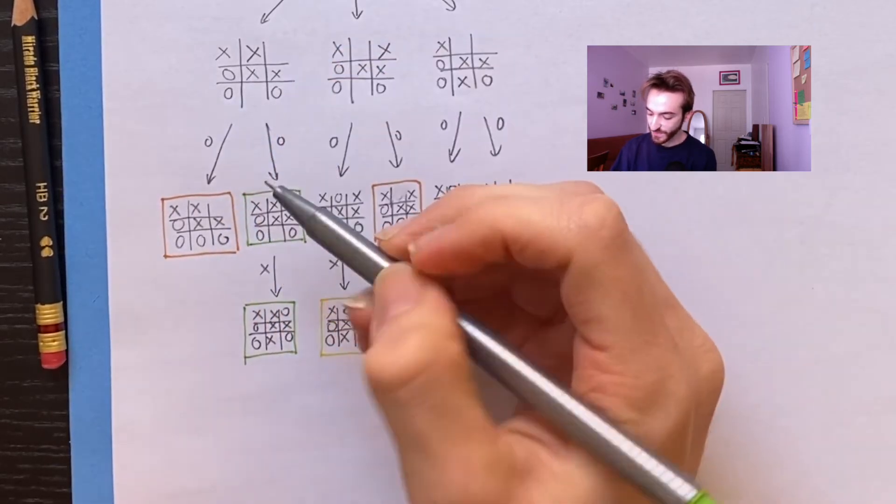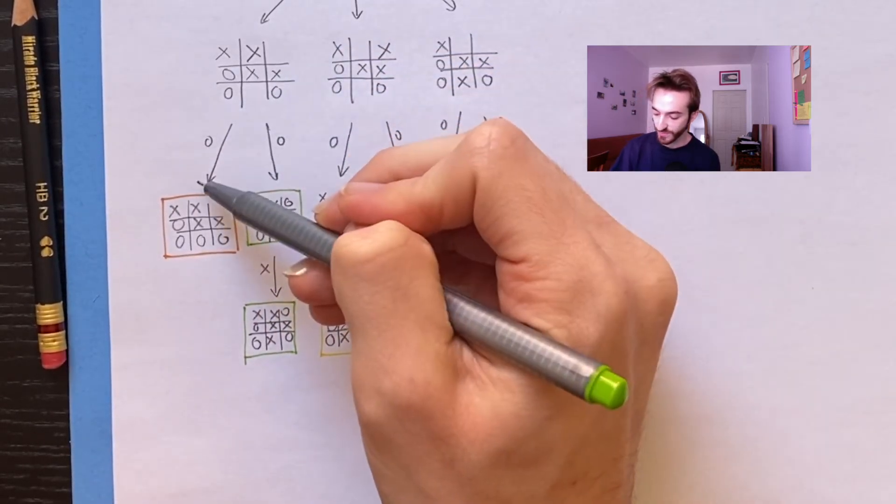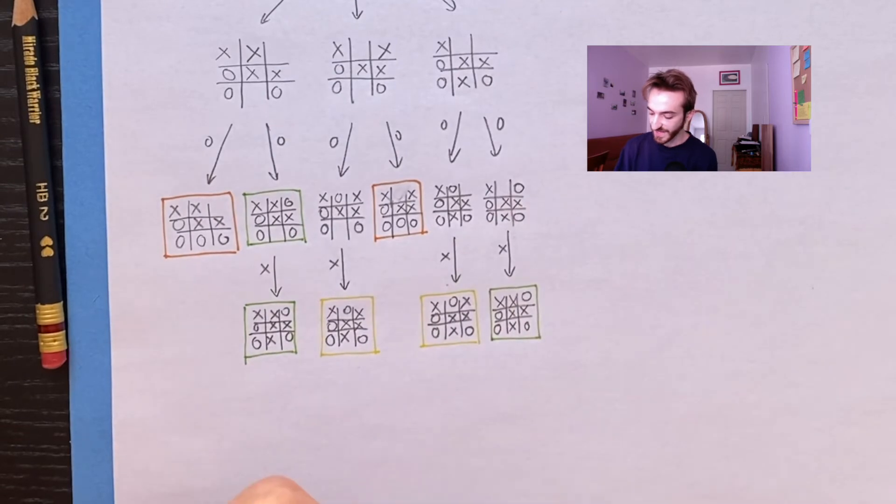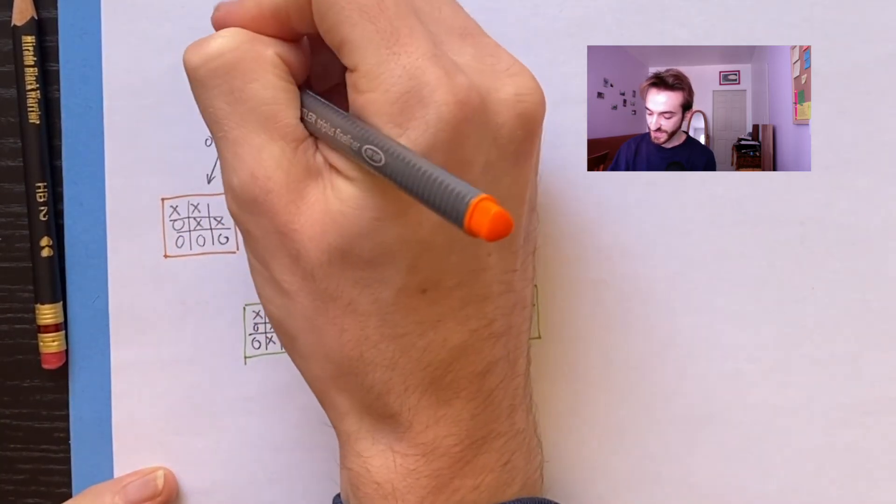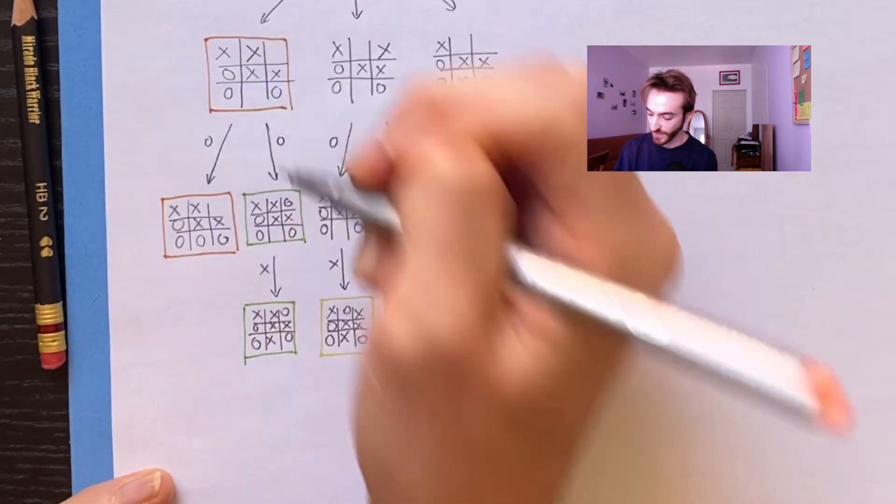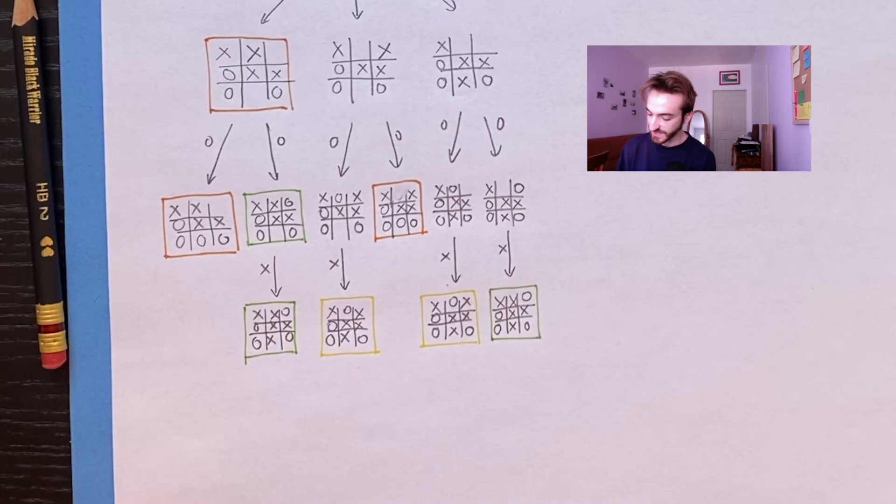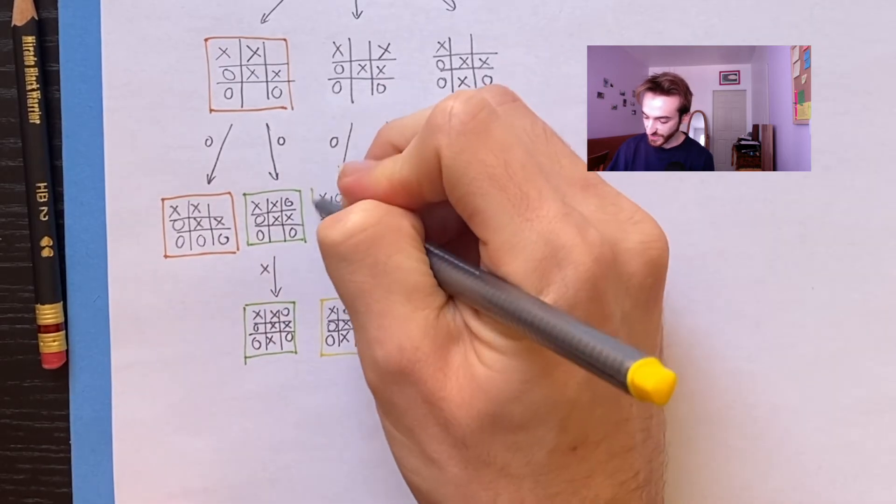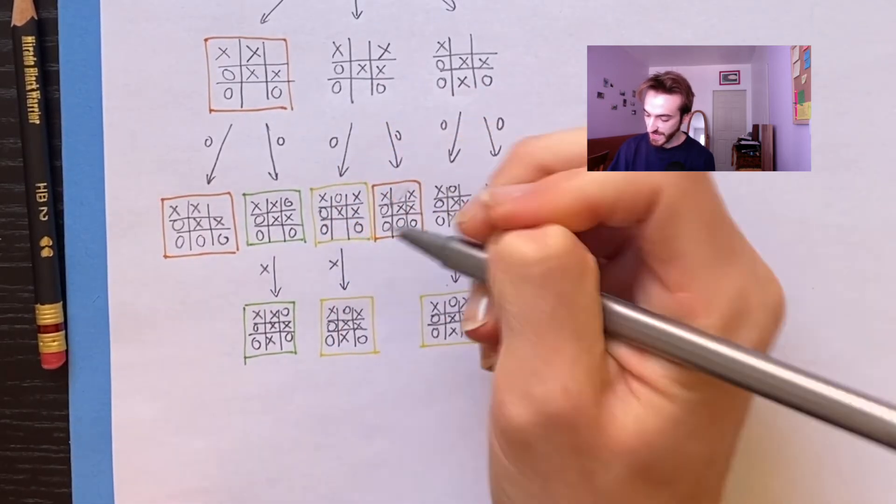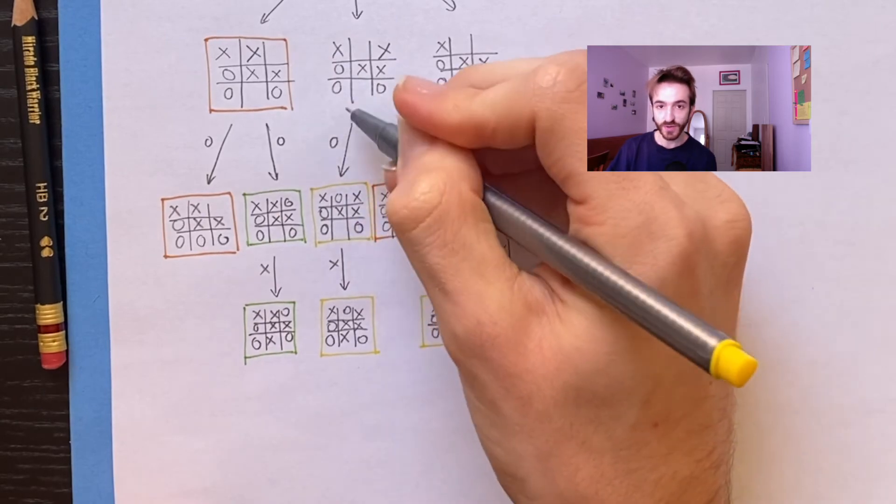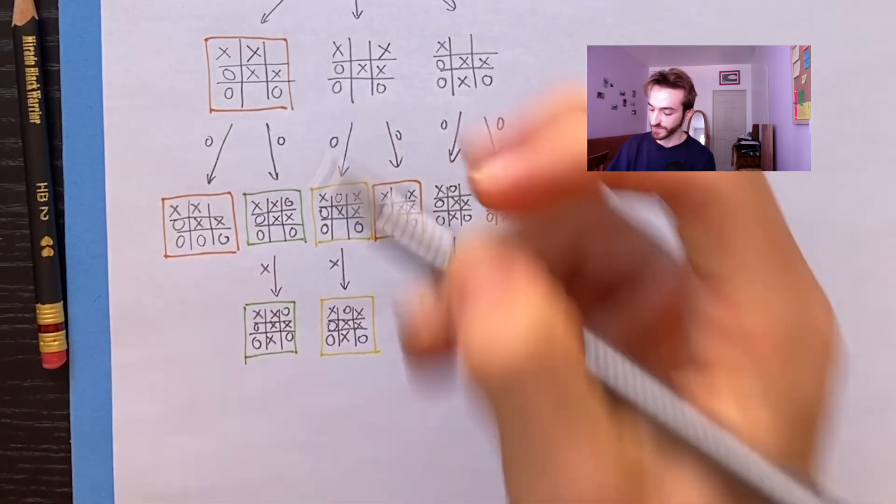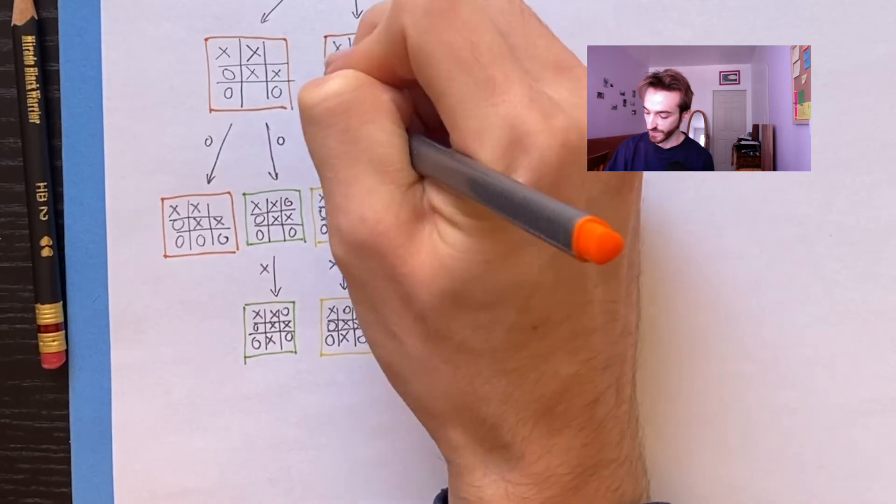Now, if you work your way back up this way, O has two options. One is a win for O, and the other is a win for X. O is definitely going to choose the option that's a win for O. So this, with best play, is a win for O. Similarly here, X has one option. It's to force a draw. That means this position here is also a draw. If O can choose between a draw and a win for O, O is going to pick the win for O. So this position also, a win for O.